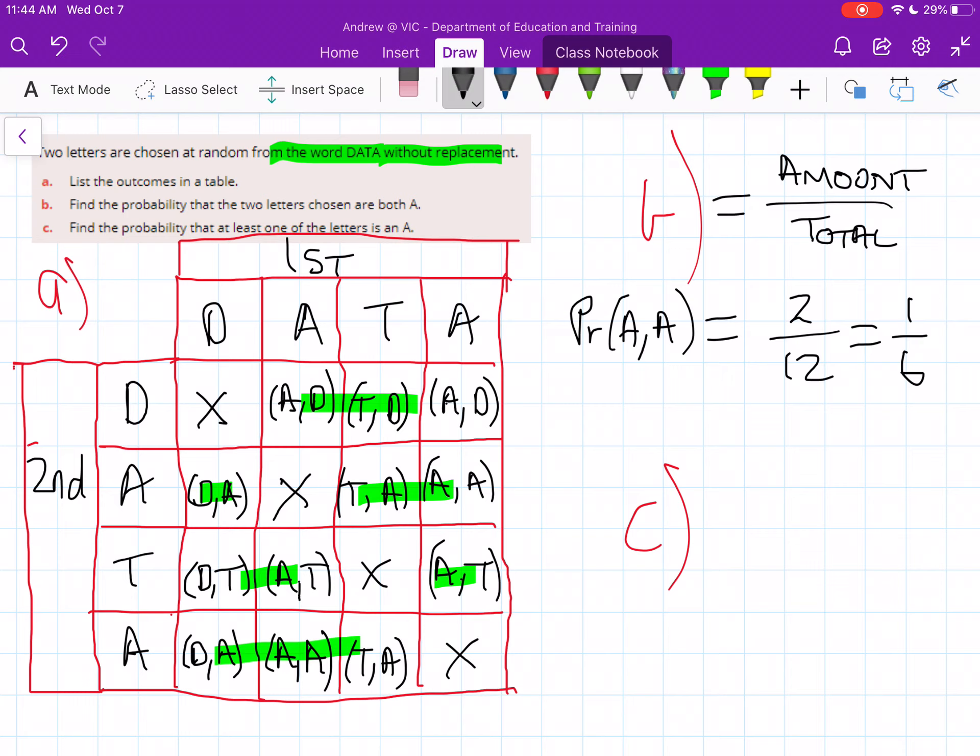Now, part C, find the probability at least one of the letters is an A. So we're trying to find the probability that A is greater than or equal to 1. So there's at least one A. So we just count every one that has an A in it. And I'll just do this in yellow. We've got 1 here, 2, 3, 4, 5, 6, 7, 8, 9, 10.